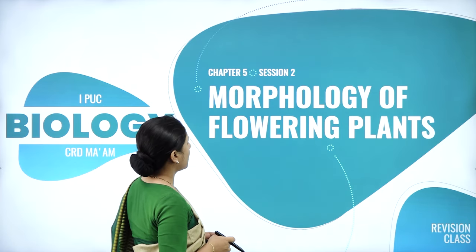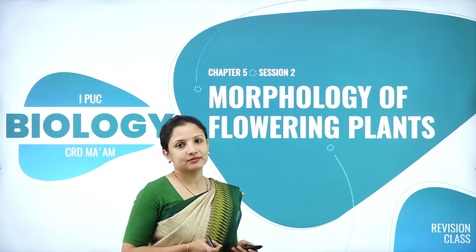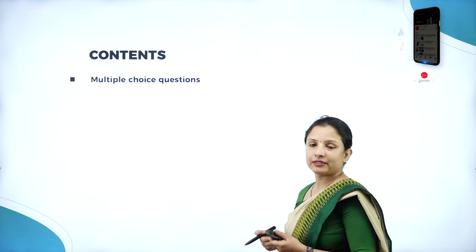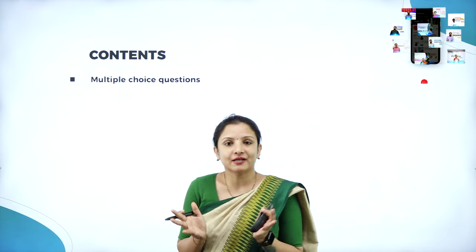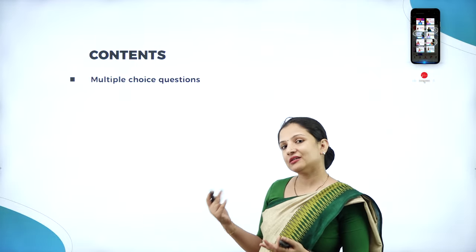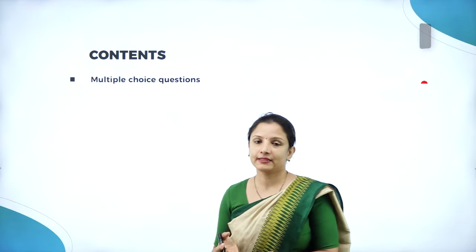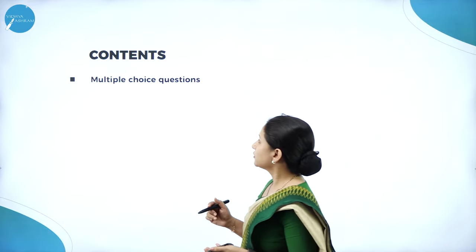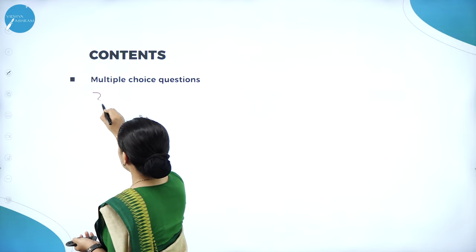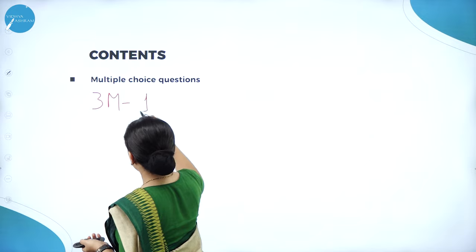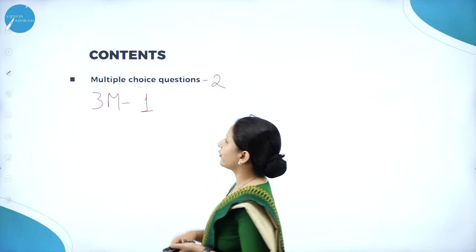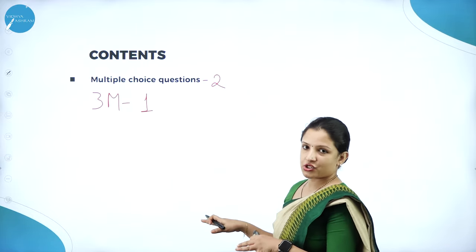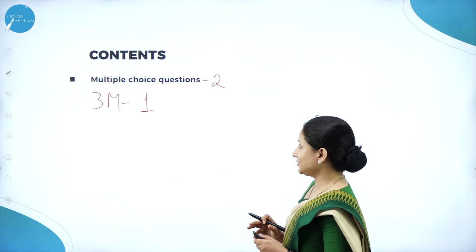In this session, we learn about the morphology of flowering plants. In the previous session of this chapter, we had dealt with the synopsis — what comes under this chapter and some important three-mark questions likely to appear. In this session, we will concentrate only on the multiple choice questions. One three-mark question and two multiple choice questions will come from this chapter.